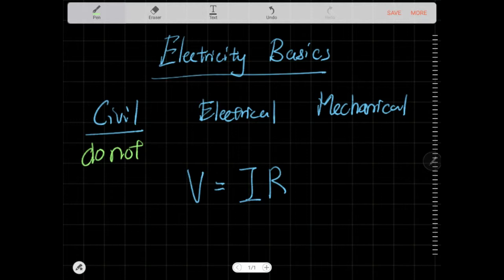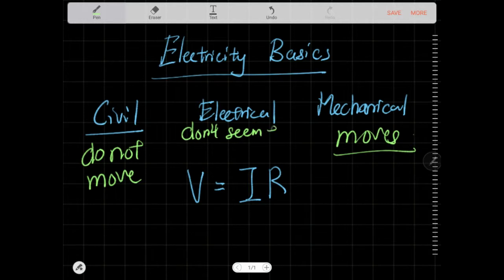Mechanical deals with things that move: motors, anything that moves, chains, belts, those kind of things that move. Electrical, they deal with things that don't seem to move but actually move. That's why you look at currents and zap zap stuff, those kind of things.